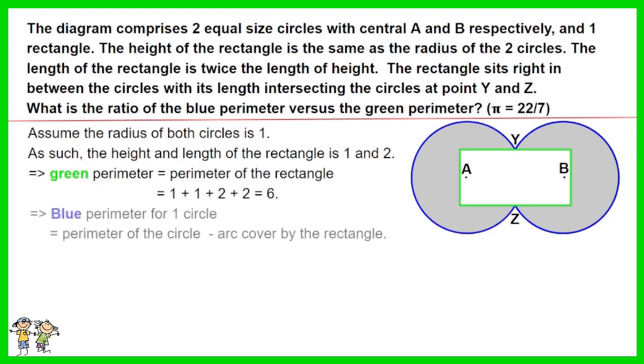The blue perimeter for one circle equals perimeter of the circle minus the arc covered by the rectangle. As shown in the diagram, the arc cover by the rectangle has an arc degree equals 60 degrees.